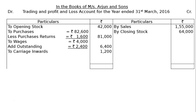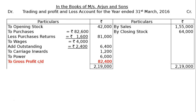Power is usually spent as factory expenditure. Total the credit side which is rupees 2 lakh 19,000. Bring it to the debit side and deduct to find gross profit carried down, which is rupees 82,400. We then take this to the profit and loss account.